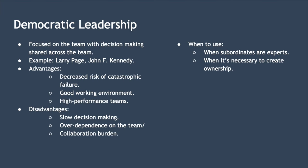When should you use democratic leadership? It works well when subordinates are experts — for example, technology or pharmaceutical domain experts. You should use it when it's necessary to create ownership amongst the team, as involving the team in decision-making and planning implicitly creates buy-in both to the decision itself and to the plan, making team members much more committed.